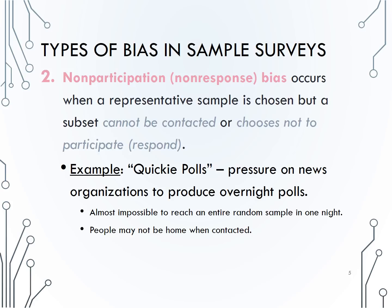For example, if a news organization is trying to reach out to viewers, it might be impossible to reach an entire random sample in one night. People may not be home when they are contacted, and therefore their results are not included in the poll's results, which are reported on the news that night. These type of quickie polls are an example of non-response bias.